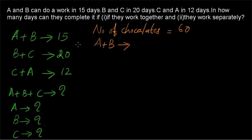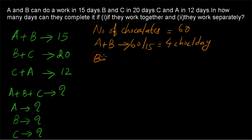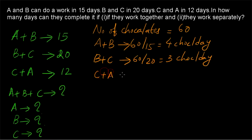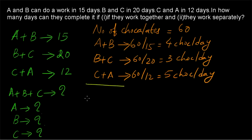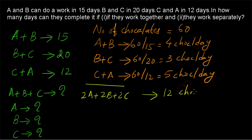A and B take 15 days, so they consume 60 divided by 15 equals 4 chocolates per day. B and C take 20 days, so they consume 60 divided by 20 equals 3 chocolates per day. C and A take 12 days, so they consume 60 divided by 12 equals 5 chocolates per day. Adding these three gives 2A + 2B + 2C = 4 + 3 + 5 = 12 chocolates per day.